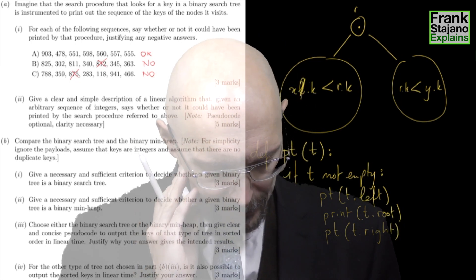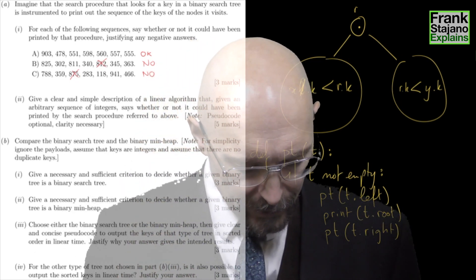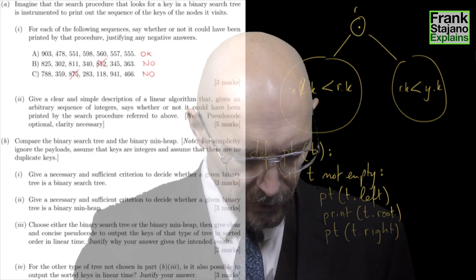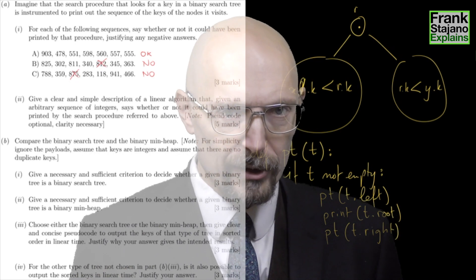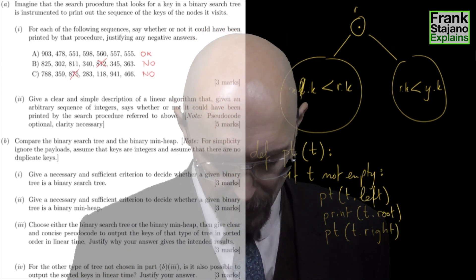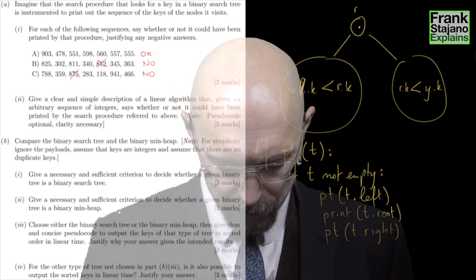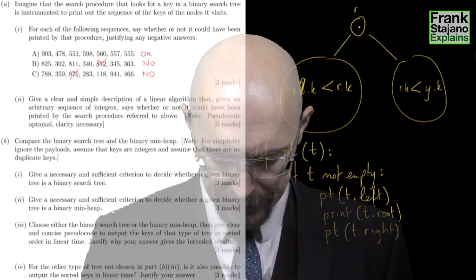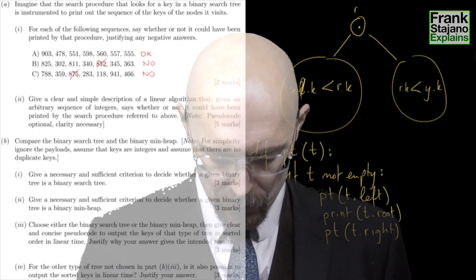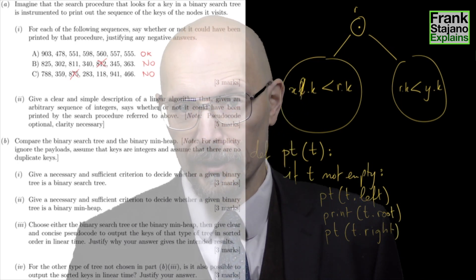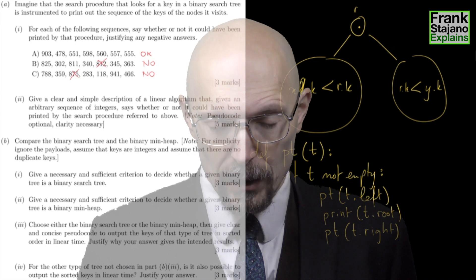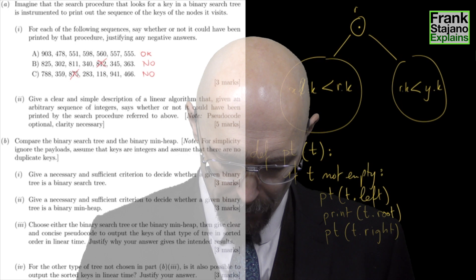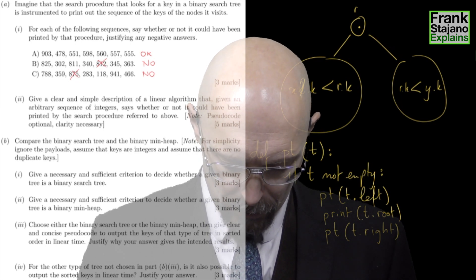So what's left to do? For the other type of tree not chosen in part B3, so that would be, for me, obviously, the min heap, it is also possible to output the sorted keys. Is it also possible to output the sorted keys in linear time? Well, I didn't think it was possible. That's why I chose the other one. But why exactly is it not possible?